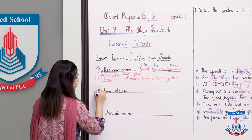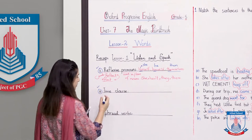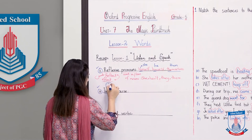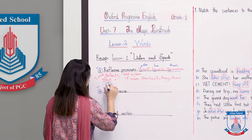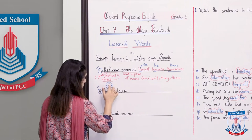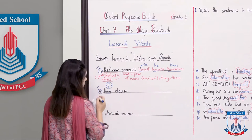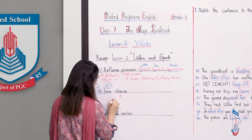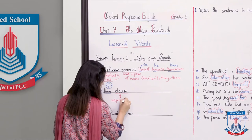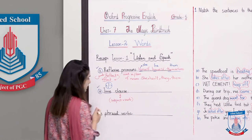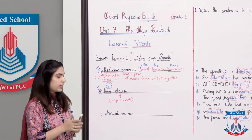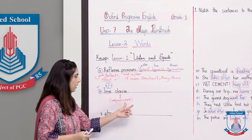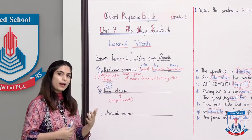Moving on to the second part, which was our time clause. A clause is a mixture of two things — it is a statement that has a subject and a verb, but at the same time it is not a complete sentence on its own. This is a clause. When we combine it with time, it becomes a time clause.